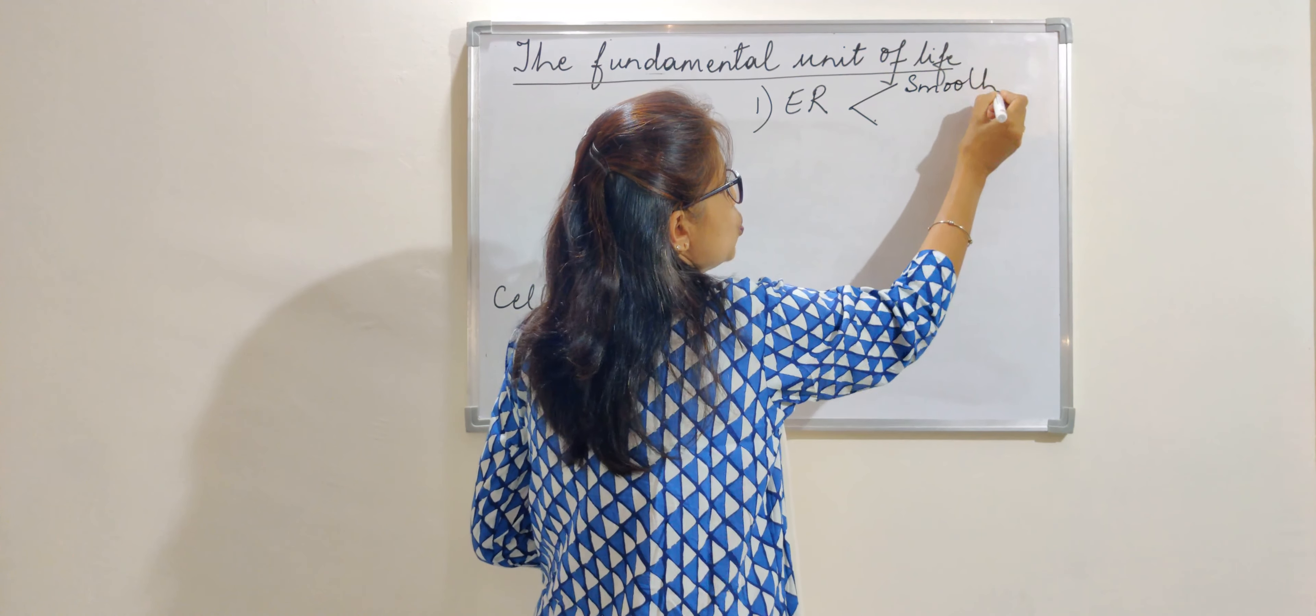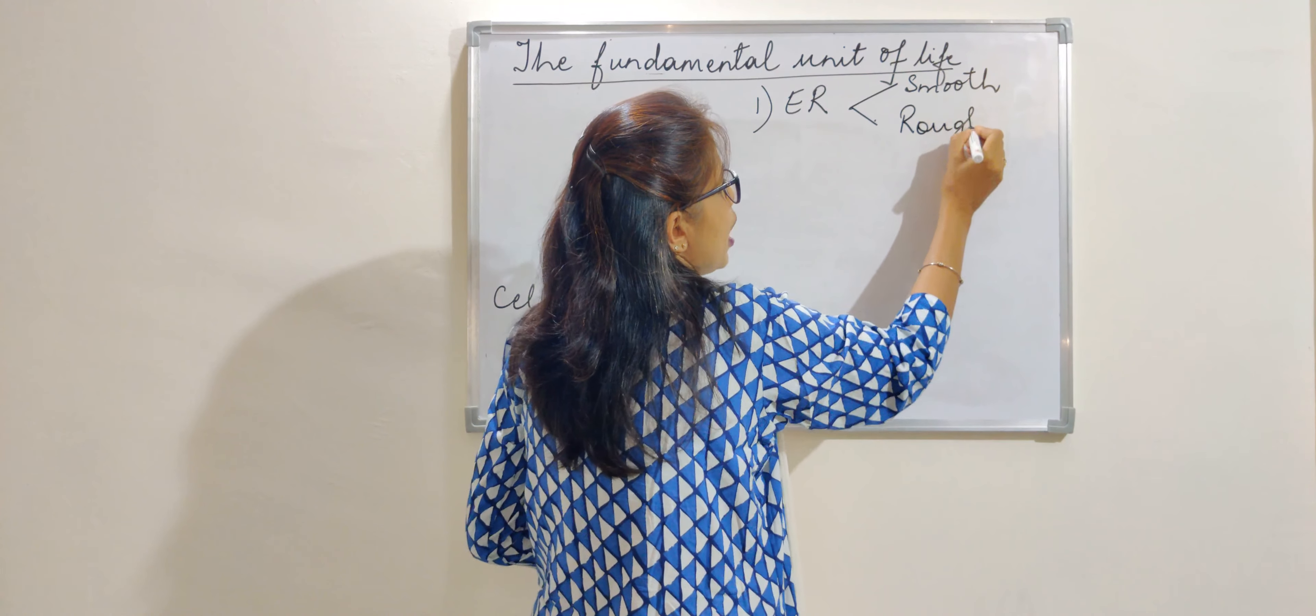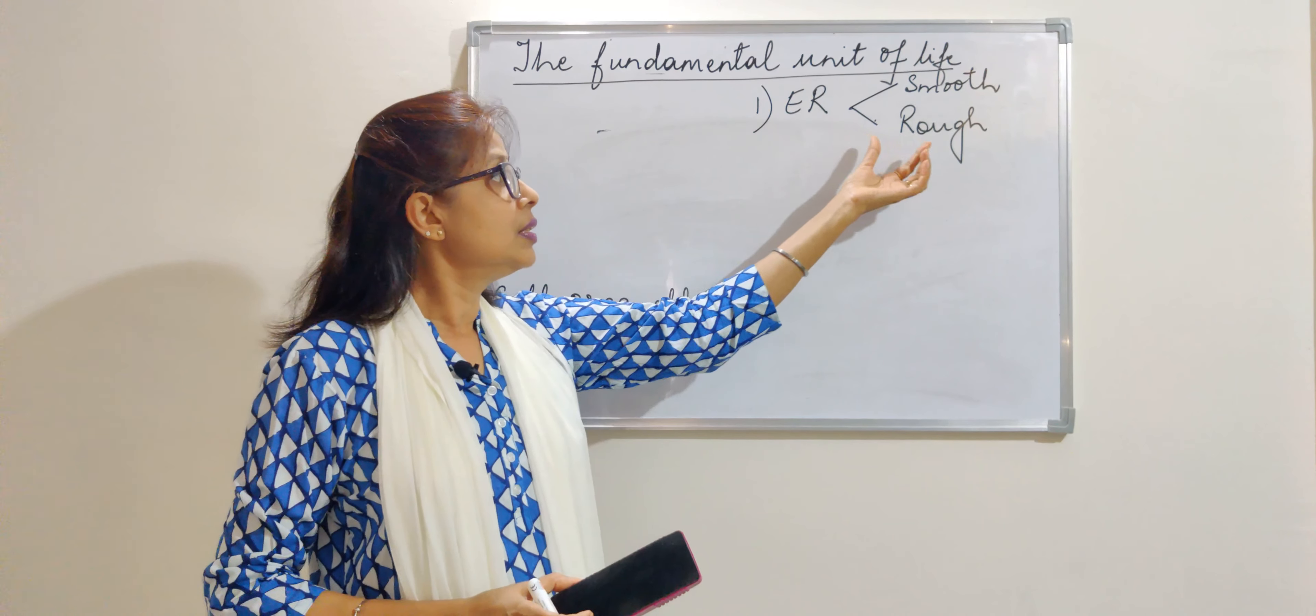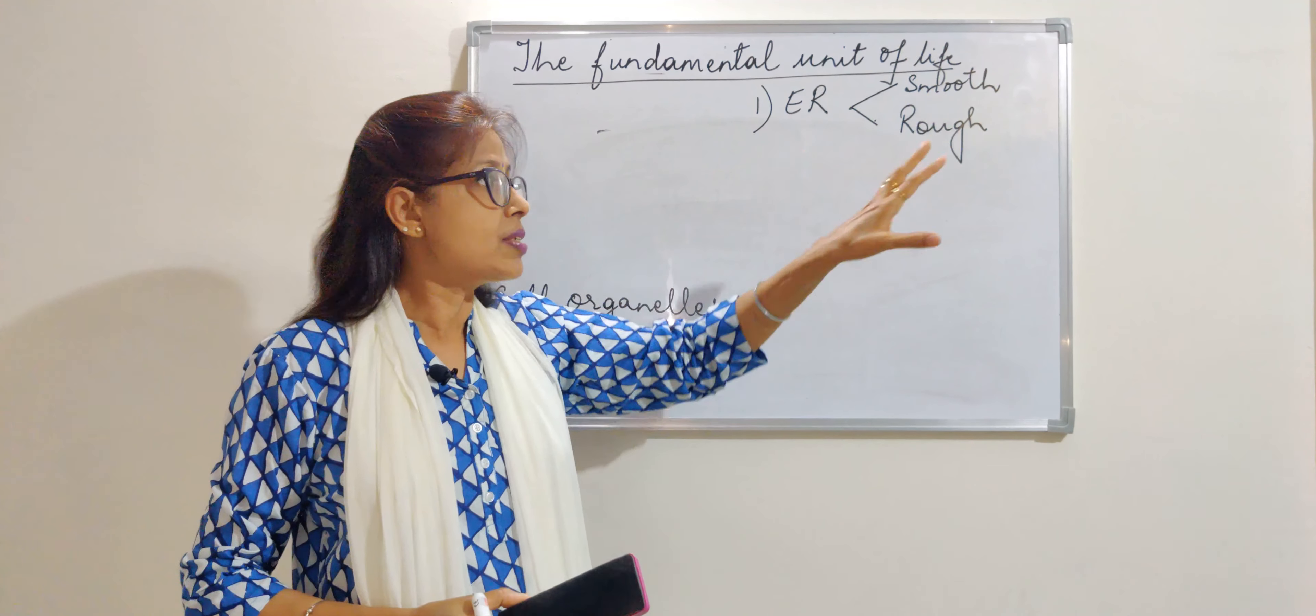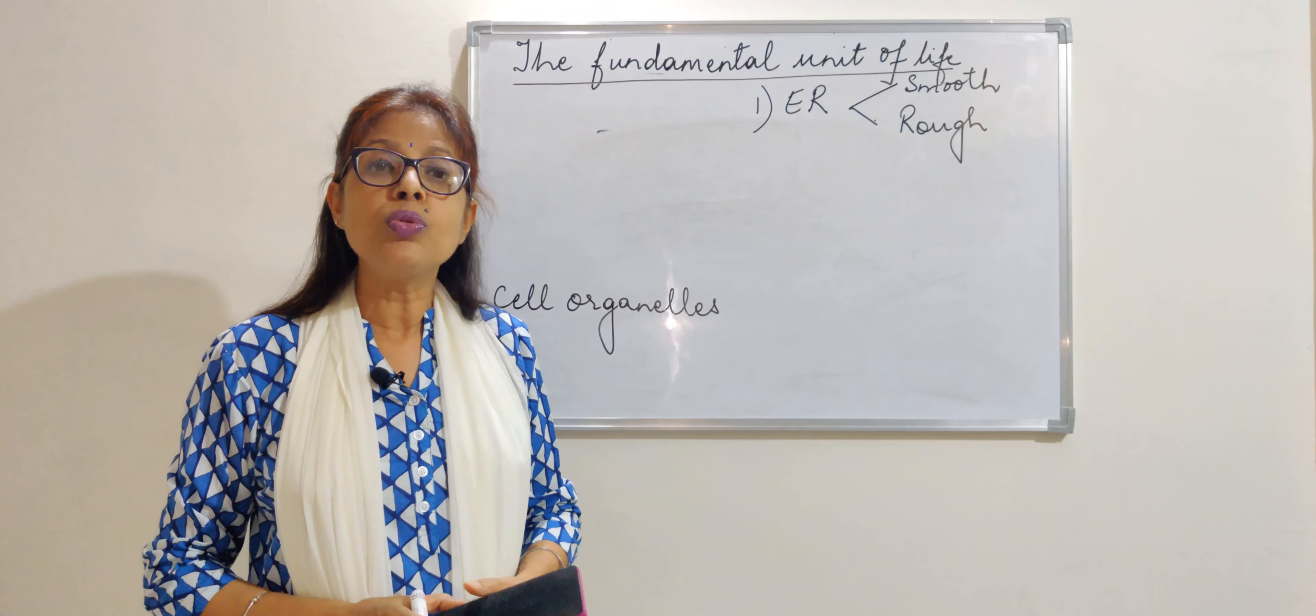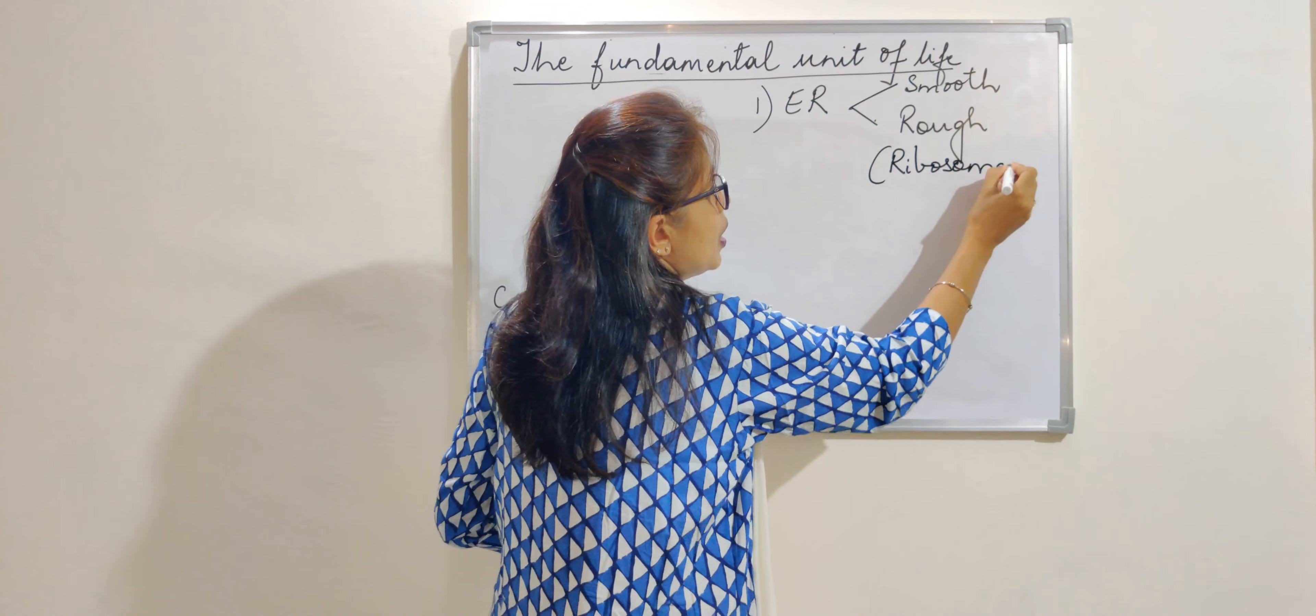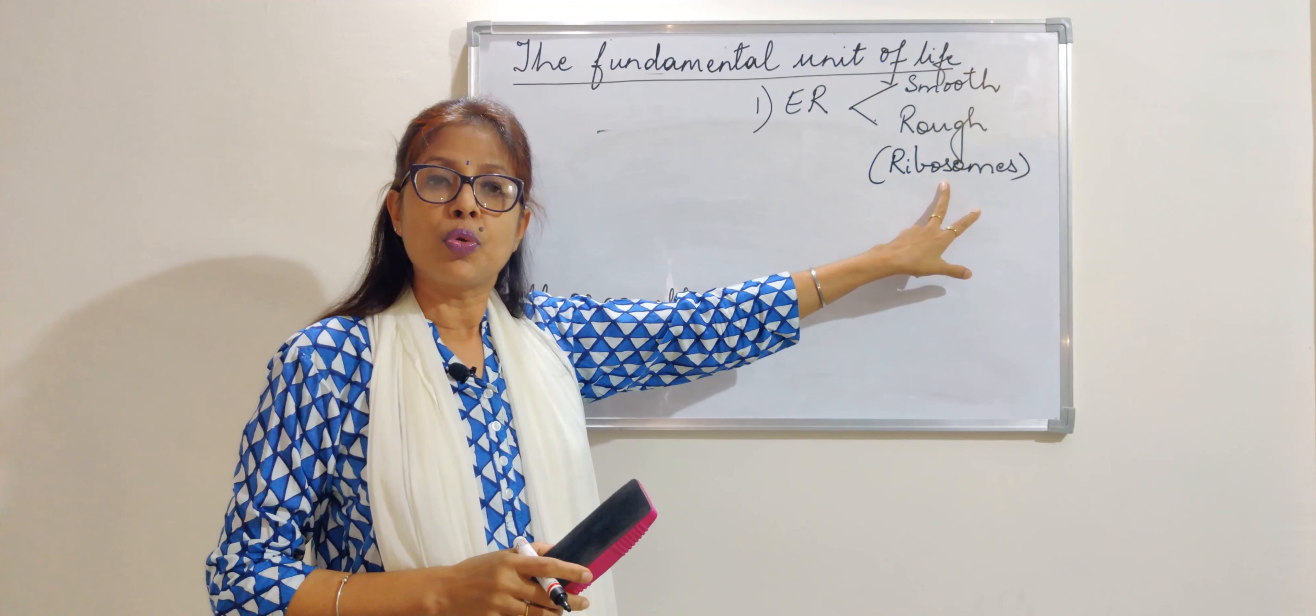One is smooth and the other is rough. Why rough and smooth? In the smooth one, it is simply present, and in the rough one, there are small granules attached to it. These granules are the granules of ribosomes, which are useful for the synthesis of protein.